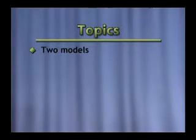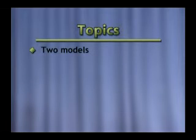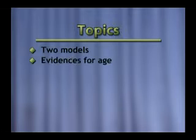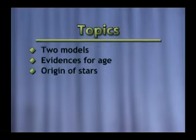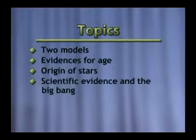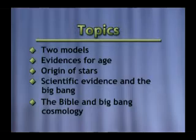Astronomy and the Bible. Our roadmap through this talk will be this: first, the two models — what does the creation model have to teach about the origin of the universe, and what does the evolution model teach about the origin of the universe? Then we'll talk about evidences for age, how old is this universe, then the origin of stars, then scientific evidence and the Big Bang, and finally the Bible and Big Bang cosmology.